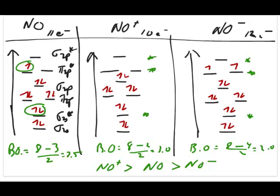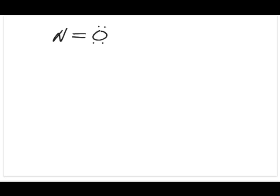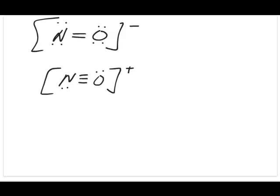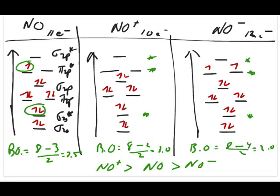This is actually in agreement with the Lewis model, because Lewis structures for NO+ and NO- show a triple bond for NO+ versus a double bond for NO-, confirming NO+ has a stronger bond. Additionally, MO gives magnetic information: NO and NO- both have unpaired electrons, so both are paramagnetic. NO+, because all of its electrons are paired, is diamagnetic.